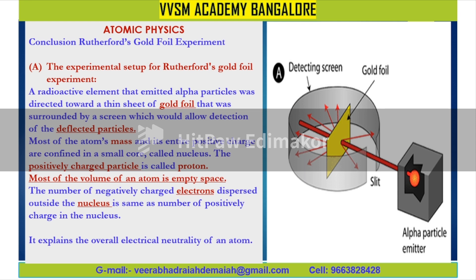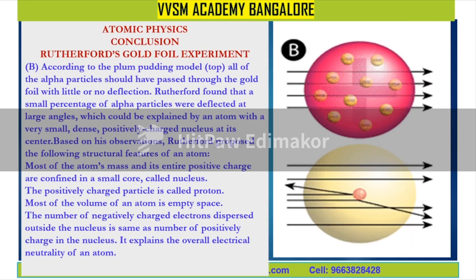Most of the volume of an atom is empty space. The number of negatively charged electrons dispersed outside the nucleus is the same as the number of positively charged particles in the nucleus. This explains the overall electrical neutrality of an atom. Rutherford's gold foil experiment shows that most of the entire positive charge is confined in a small core called the nucleus of an atom.